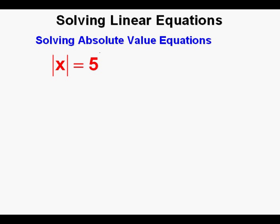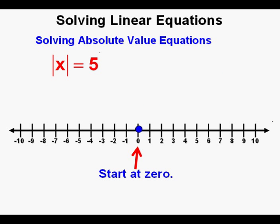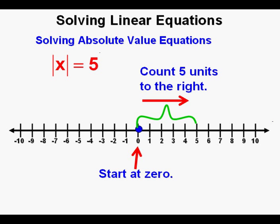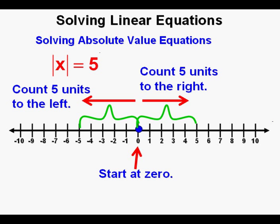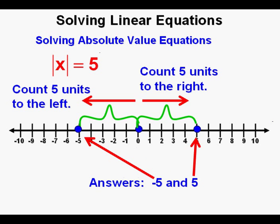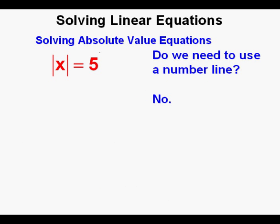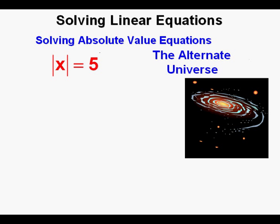Now we'll look at this equation: the absolute value of x equals 5. Going back to the number line, we start at 0, count 5 units to the right, and 5 units to the left. So our answers to the equation are x equals 5 and x equals negative 5. In set notation, we place the numbers inside brackets — each number separated by a comma represents a solution.